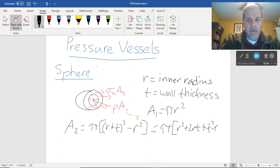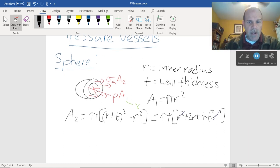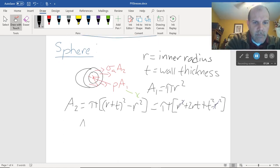And that's going to be minus r squared. And you'll notice the r squareds take off, right? So technically my area a2, that ring, is equal to pi times 2rt plus t squared.